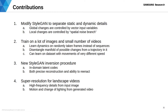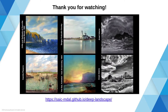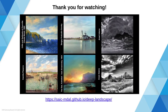Let us emphasize our contributions. First, we proposed an extension to the StyleGAN model which allows for separate control of static and dynamic parts of an image. Second, we show that it is possible to learn video generation from a large image dataset and a small video dataset. Third, we proposed a special generator inversion procedure which leads to in-domain latent codes and results in both precise reconstruction and the ability to manipulate real images. Finally, we proposed a super-resolution architecture suitable for landscape videos. Thank you for watching. For more details, please refer to our paper and supplementary materials.